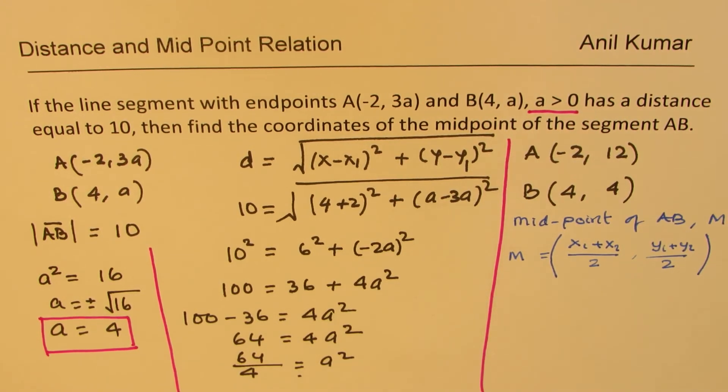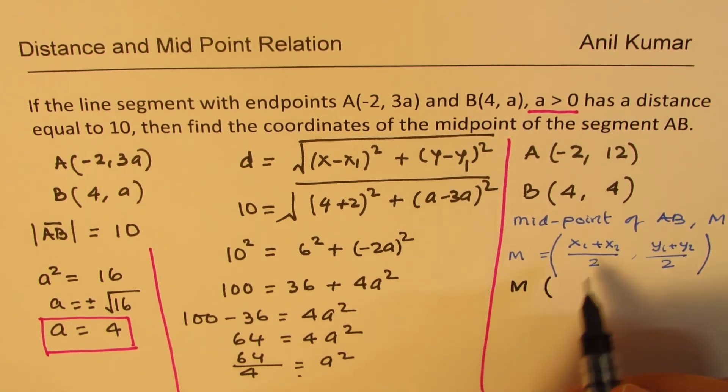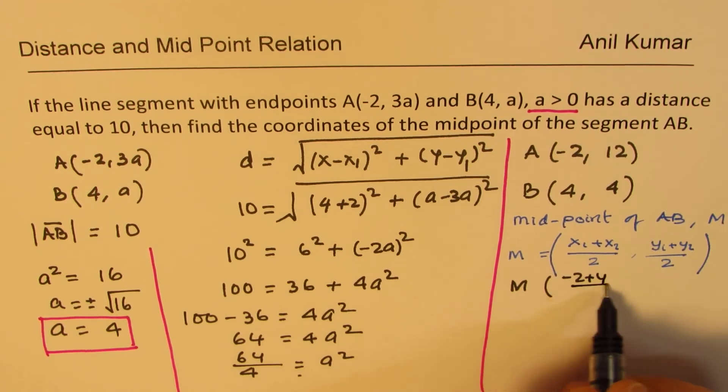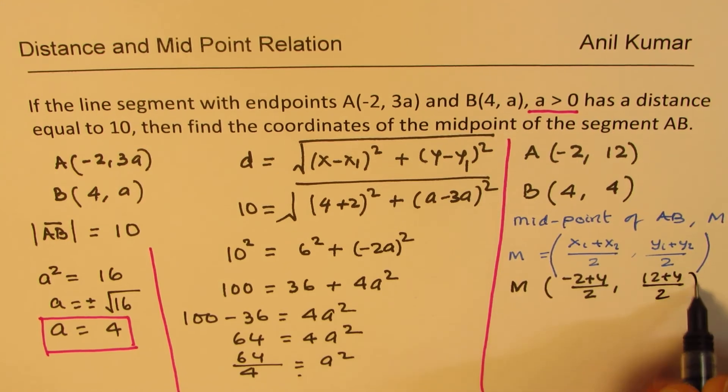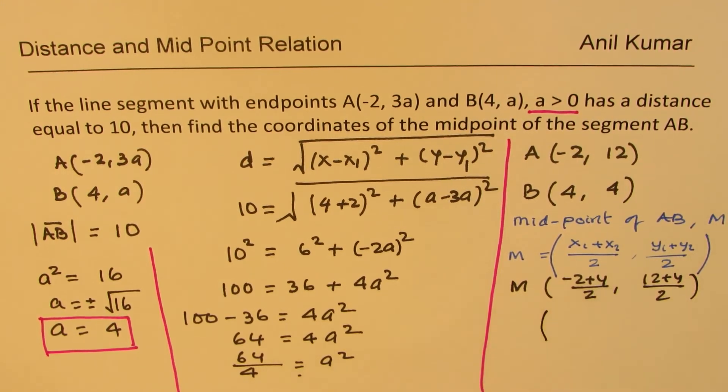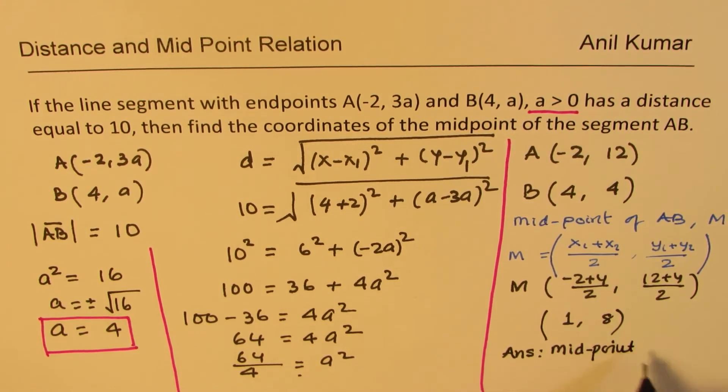Using this formula, we get the coordinates of midpoint M = ((-2 + 4)/2, (12 + 4)/2). That gives you 2/2 which is 1, and 16/2 which is 8. So our answer is: the midpoint is (1, 8).